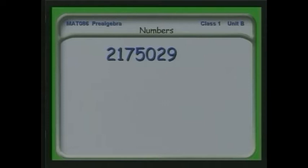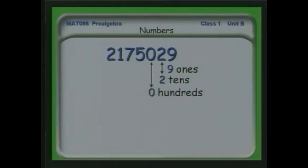Now let's take a look at some numbers and see how we take them apart. For example, let's see what this number means. We have nine ones, two tens, no one hundreds. What a number is worth depends on its position in the larger number. So if we have something that's worth 100 but there are no hundreds, we use a zero to hold that place.